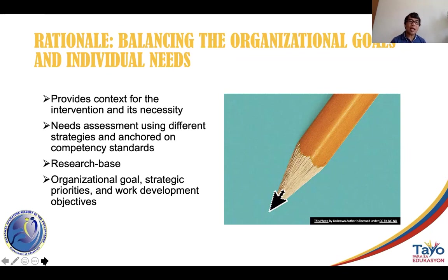You also need to look at the context of the organization: what is the goal, what are the strategic priorities, and what work development objectives need to be addressed? You need to balance organizational goals and individual needs to develop a design that addresses both. This is what you call strategic training — looking at organizational goals and individual needs, maximizing individual competencies to support the attainment of organizational goals.